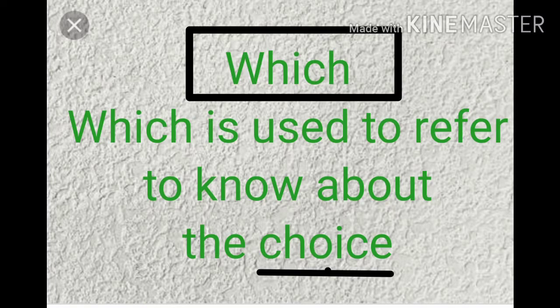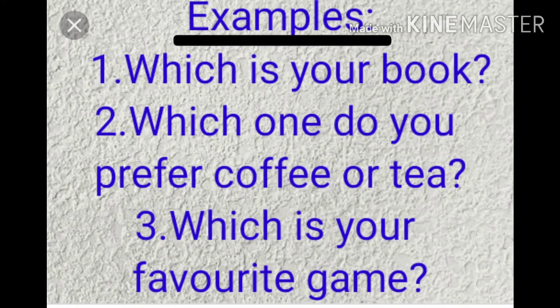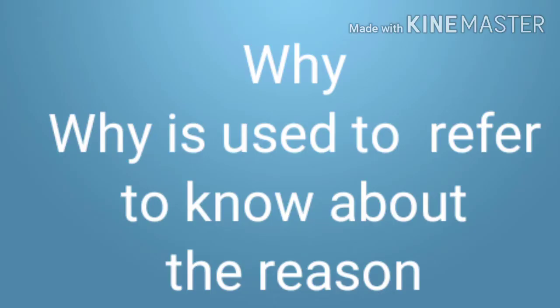The next one is WHICH. WHICH is used to refer to know about the choice. You have to make a choice between two or more things. Examples: Which is your book? — there are so many books, so you have to choose one. Which do you prefer — coffee or tea? Which is your favorite game? — there are so many games, but you have to choose one.